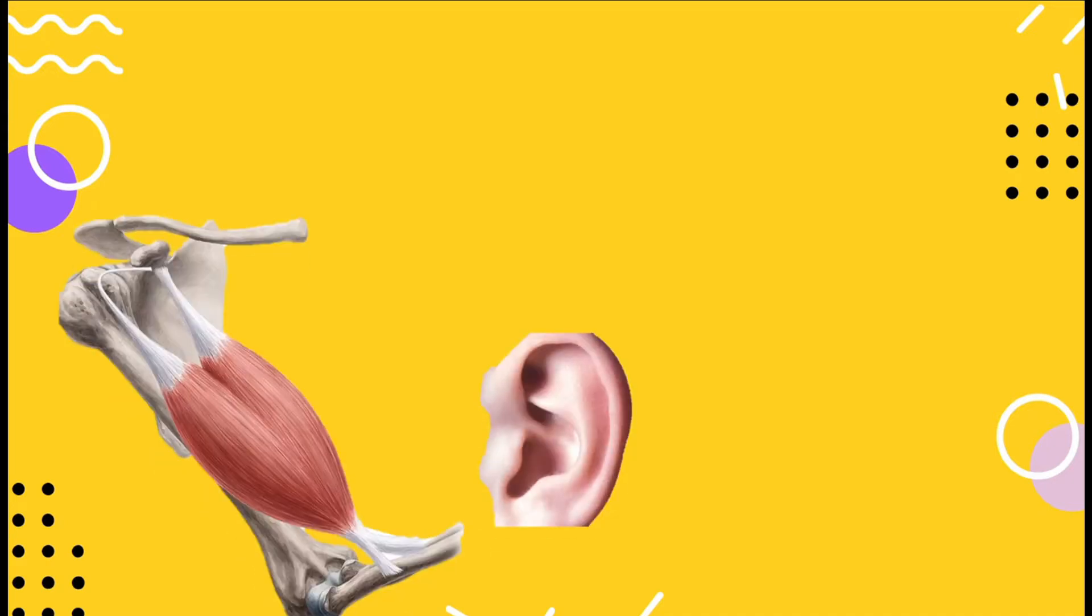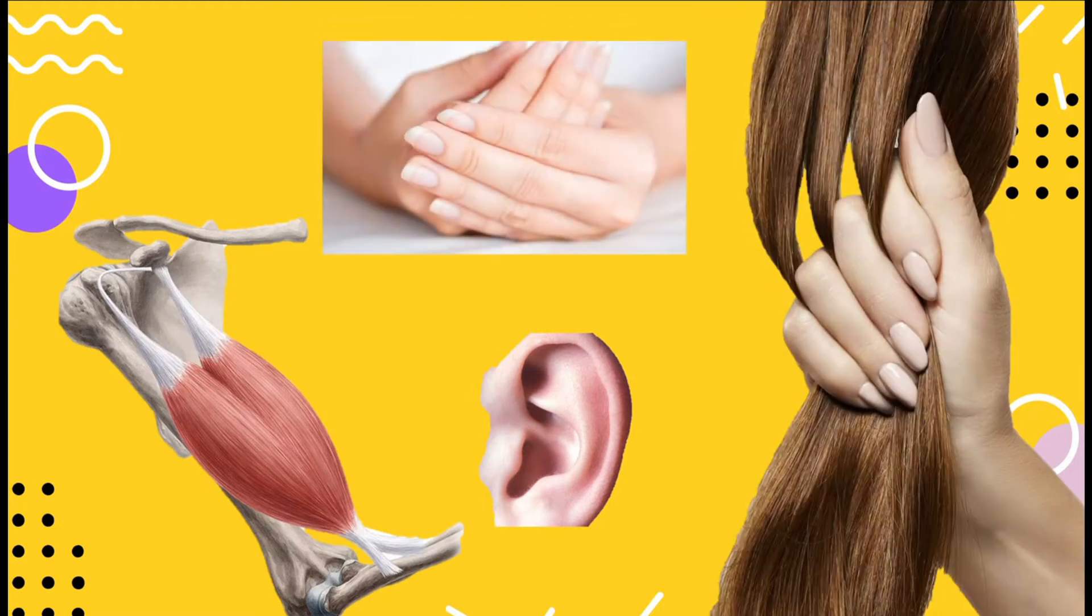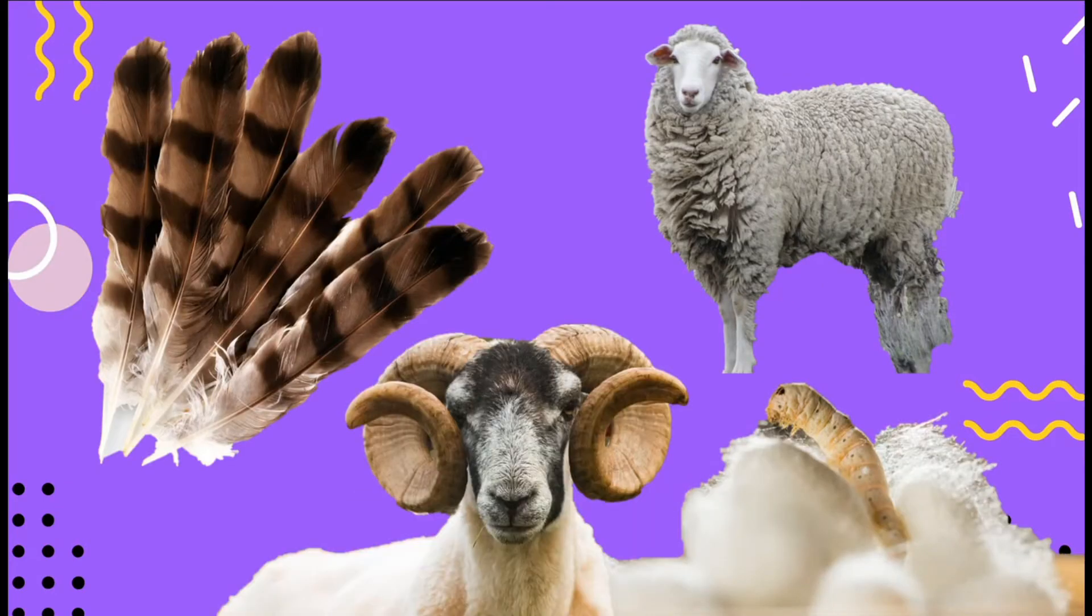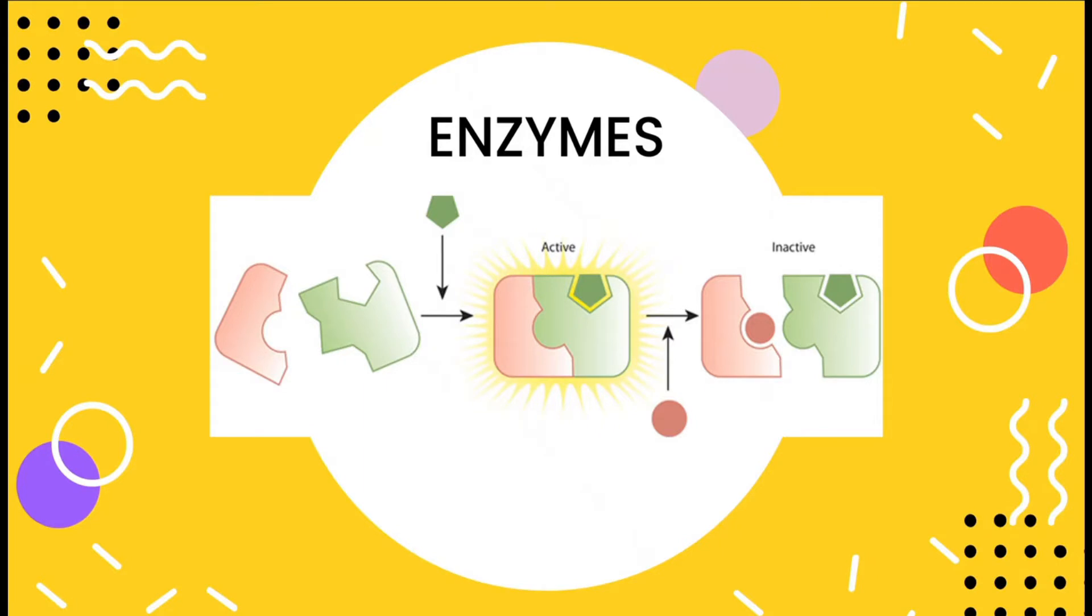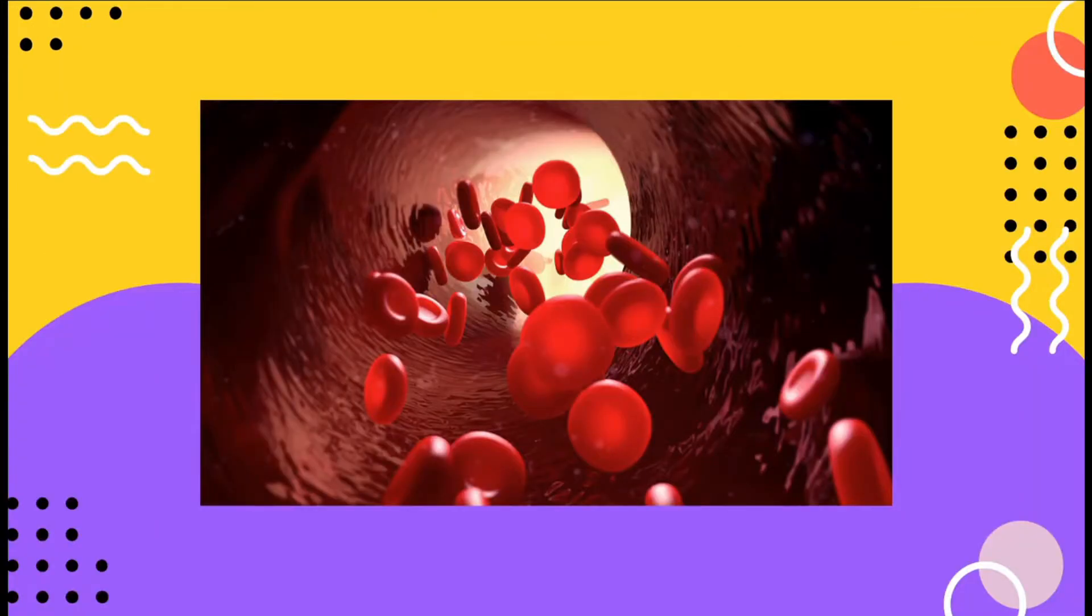There are proteins that form structural components such as the cartilage in our ears, muscles, hair, and skin. The wool, silk, feathers, and horns of animals are also made of proteins. There are also proteins which we call enzymes that regulate biological processes like digestion and cellular metabolism. Other proteins like hemoglobin and myoglobin transport oxygen in the blood and muscle.